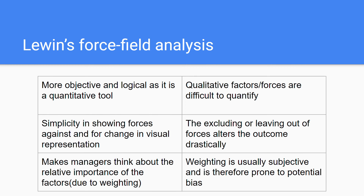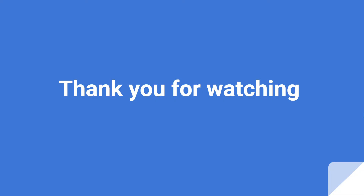The last disadvantage is that weighting is usually subjective and therefore prone to potential bias. This is the same argument that applies to other quantitative tools such as the decision tree — the manager has to come up with scores or percentages themselves. In the decision tree it's the probability of success or failure; here it's the score from one to five, which makes it prone to potential bias. Thank you for watching and I'll see you in the next video.